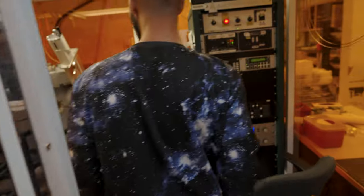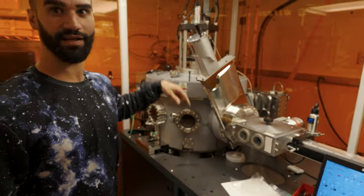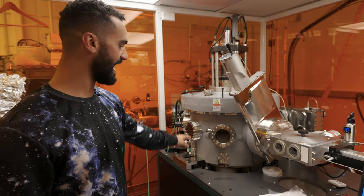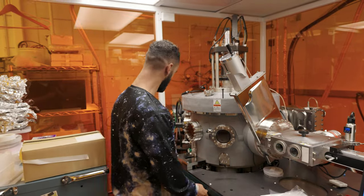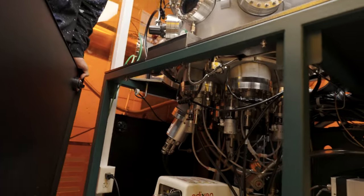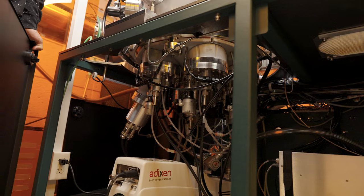This is our AJA sputtering system. It has six sputter guns that you can see in here. Each of these guns have a target on them - the target has a particular metal or material that you want to be sputtered.